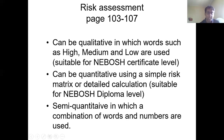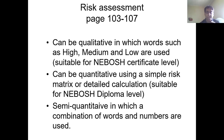Risk assessments can be qualitative, quantitative in terms of numbers, or semi-quantitative in which a combination of words and numbers are used — this is more for the Certificate students. The quantitative method is meant for diploma level. At the certificate level we would use qualitative and semi-quantitative. There are advanced risk assessment calculations using decimal points like 0.866 or 0.566, but those are for the advanced levels.